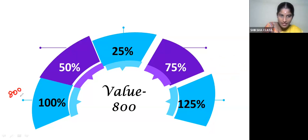100% of 800 is same as 800. 50% of 800, then 50% of 800 is equal to 400.